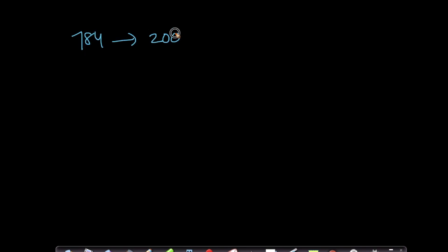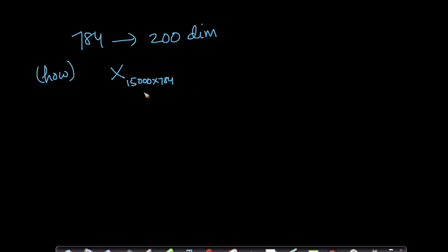Imagine now that I want to go from 784-dimensional data to 200 dimensions — how do I do it? It's very simple. I have a data matrix X, which is, say, 15,000 points × 784. If I multiply this matrix X with another matrix V — where V is 784 × 200 — this V is composed of the top 200 eigenvectors.